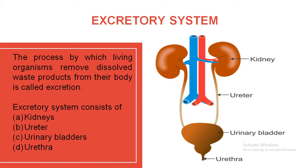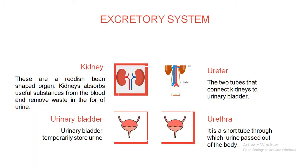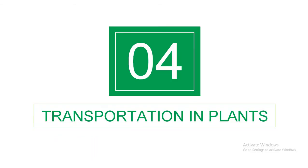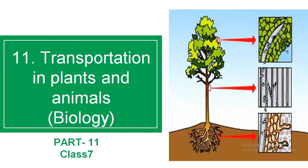We understood what the organs are and the function of each respective organ. We have now completed the human beings section — we understood the human circulatory system as well as the excretory system and the whole transportation process. Now it's time to understand about plants. Let me recall the plant parts: starting from the bottom — root, stem, branches, leaves, flowers, buds, fruits, and so on.